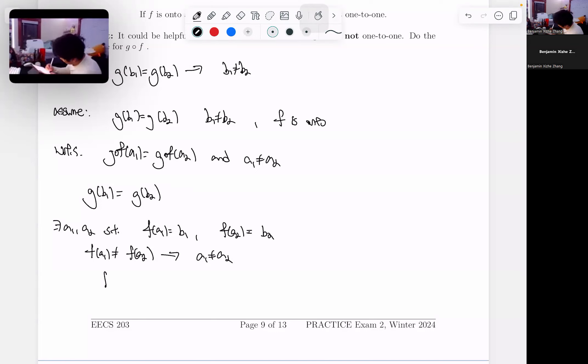We have g of f of a1. We know this equals b1. We have g—I guess we know that this equals some output element. So this is g of b1, and we know g of f of a2 equals g of b2.